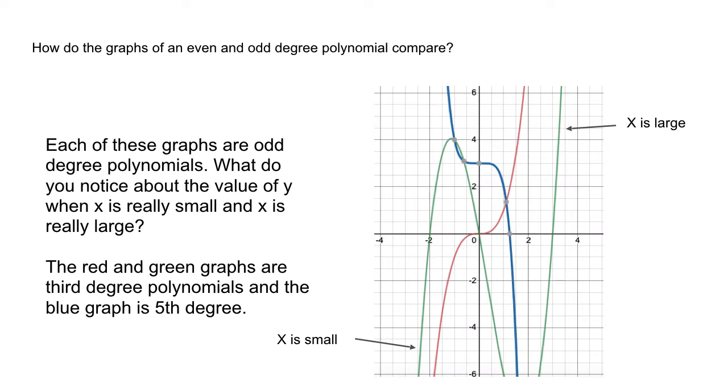Each of these graphs is an odd polynomial graph. I can see that by looking at where the graph begins when x is small as I travel from left to right, then x becomes very large. We can see that the green graph starts in the negatives for the y values but ends up in the positives for the y values when x is very large. Same thing with the red graph.